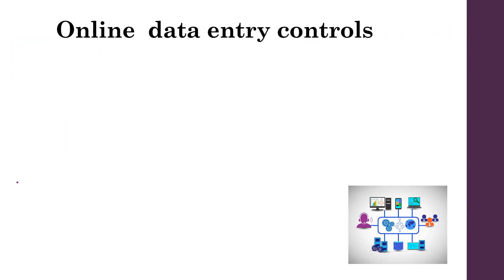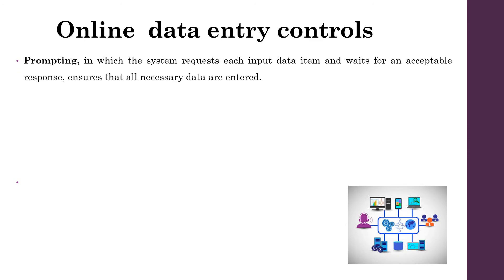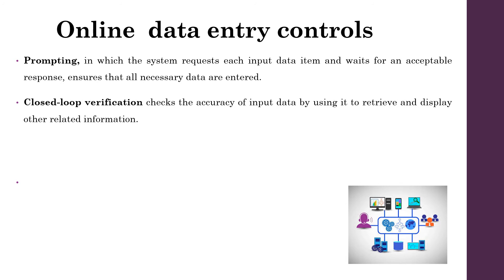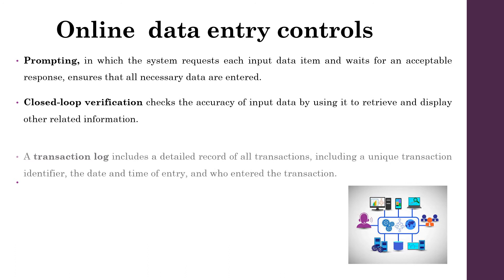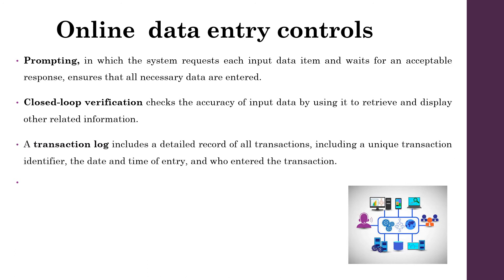Regarding online data entry controls, closed-loop verification checks the accuracy of input data by using it to retrieve and display other related information. A transaction log includes a detailed record of all transactions, including a unique transaction identifier, the date and time of entry, and who entered the transaction.